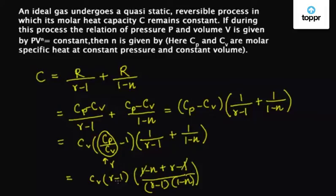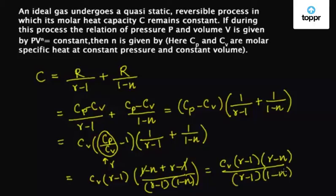1 gets cancelled with minus 1, so we are left with Cv into gamma minus 1 into gamma minus n upon gamma minus 1 into 1 minus n. Gamma minus 1 gets cancelled with gamma minus 1.